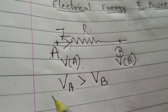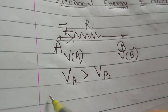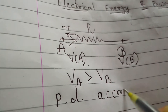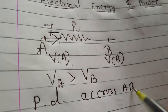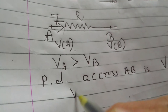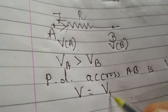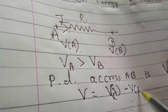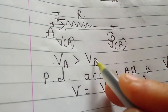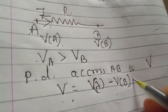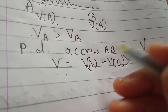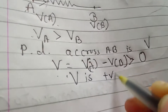From this figure, the potential difference across AB, suppose V, can be written as VA minus VB. Since VA is greater than VB, we can say that V is greater than zero — in other words, V is positive.